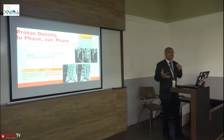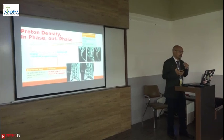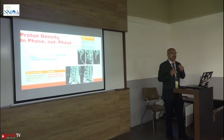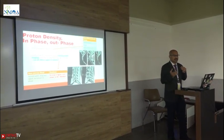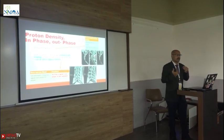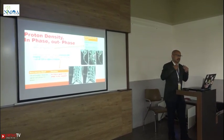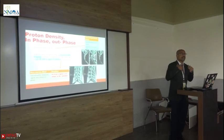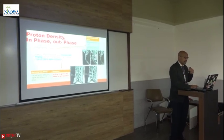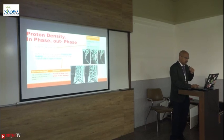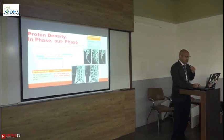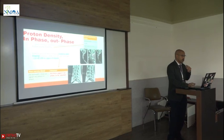Now let's come to sequences we don't see regularly. There is the proton density sequence, which is generally used in patients with multiple sclerosis. If there is a suspicion that a patient might have multiple sclerosis causing demyelination, we can use this sequence in which we can see patchy involvement of the cord.